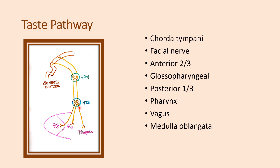The first-order neurons enter into the medulla oblongata and terminate in the nucleus tractus solitarius. So, anterior two-thirds of the tongue taste sensation is carried by the chorda tympani branch of the facial nerve, posterior one-third by the glossopharyngeal nerve, and from the pharynx it is carried by the vagus nerve to the nucleus tractus solitarius in the medulla oblongata.